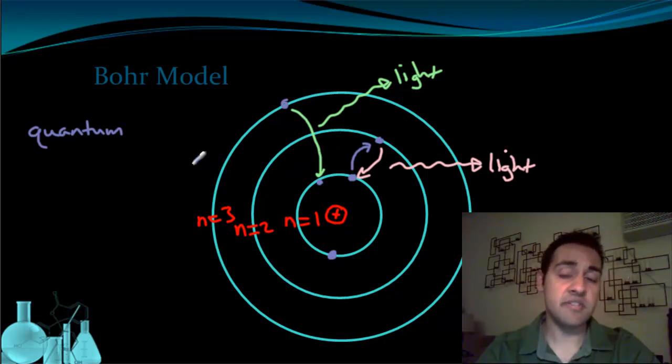Bohr's model was able to successfully explain the colors that hydrogen emits. However, it only works for hydrogen and a couple of other elements. It did not do a good job of explaining anything else. So in the next video, we'll see how Bohr's model gets taken one step further to really explain all cases.